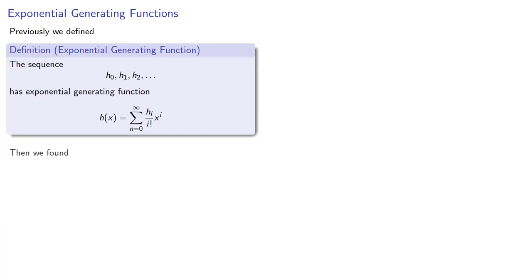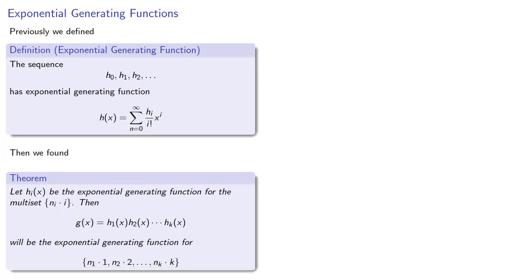Previously, we defined exponential generating functions. Then we found that the product of exponential generating functions for multisets with just a single type of object will give us an exponential generating function for the multiset consisting of different types of objects. Let's see how that works.